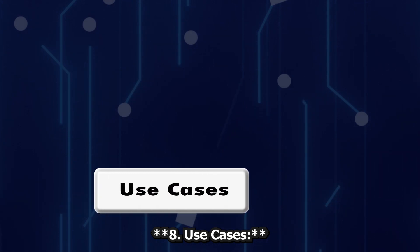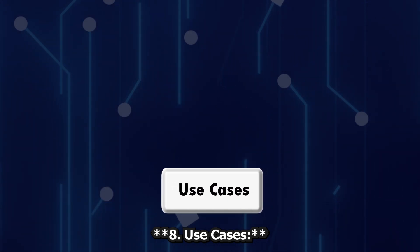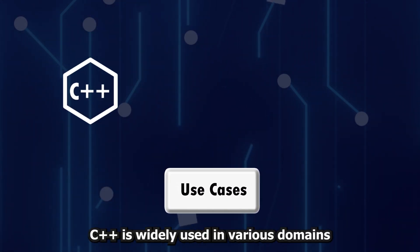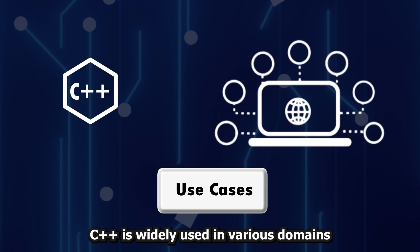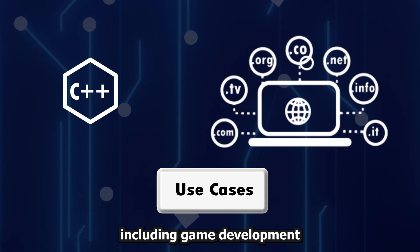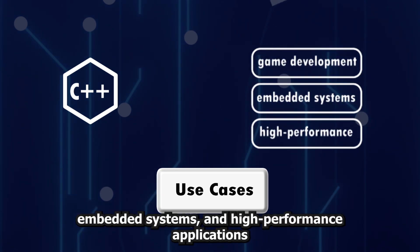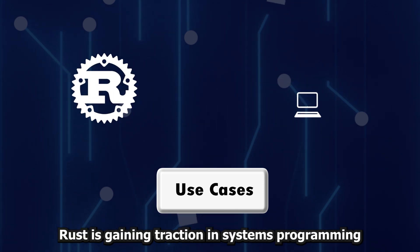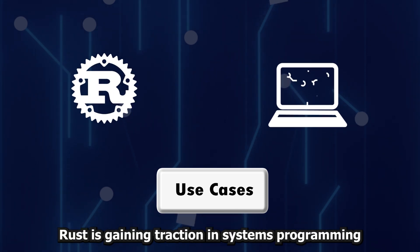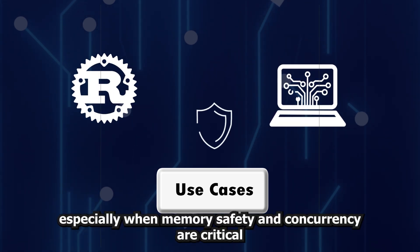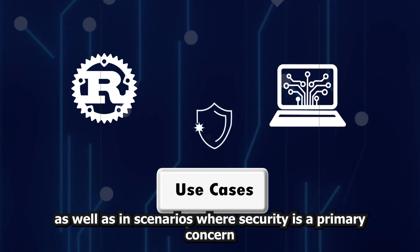8. Use Cases. C++ is widely used in various domains, including game development, embedded systems, and high-performance applications. Rust is gaining traction in systems programming, especially when memory safety and concurrency are critical, as well as in scenarios where security is a primary concern.